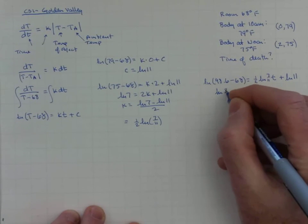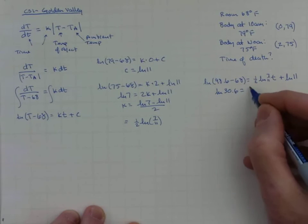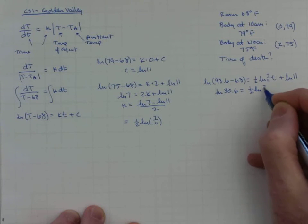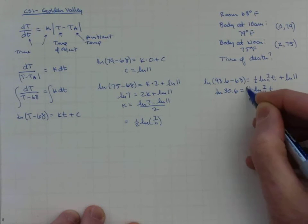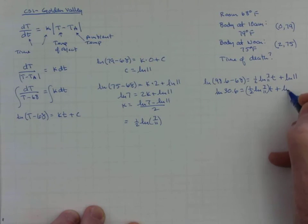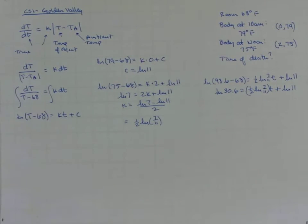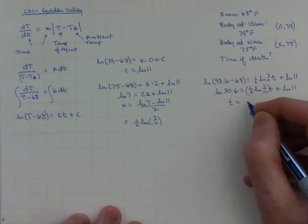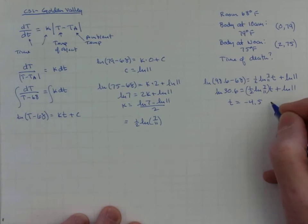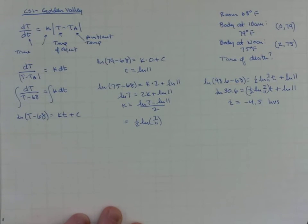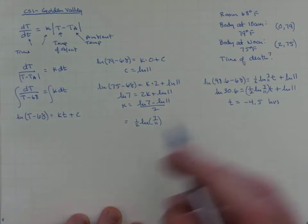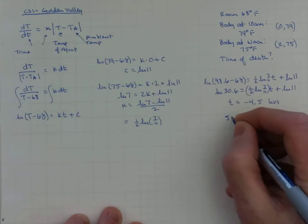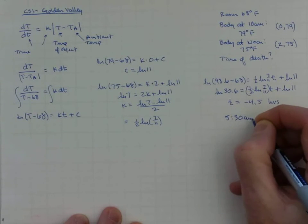Then we just need to work the arithmetic. On the left, we've got the natural log of 30.6 equal to (1/2) ln(7/11) times t plus ln 11. We subtract the ln 11 from both sides, divide by the (1/2) ln(7/11), and we get that t is about negative 4.5 hours. Since we decided we were counting temperature from 10 a.m., we roll it back 4 and a half hours, and we are very close to 5:30 a.m.